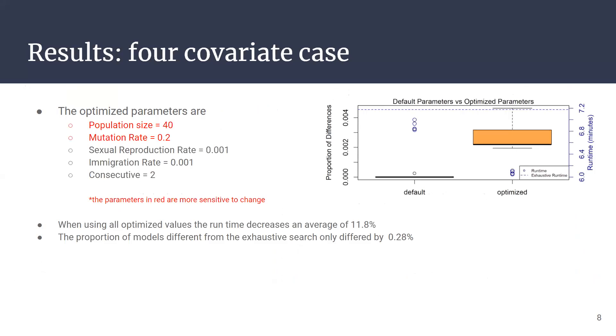Here we can see the optimized parameters that I had just mentioned. The ones in red are more sensitive to change, meaning that as you change their values, the proportion of differences or the runtime will significantly increase or decrease compared to the other ones.